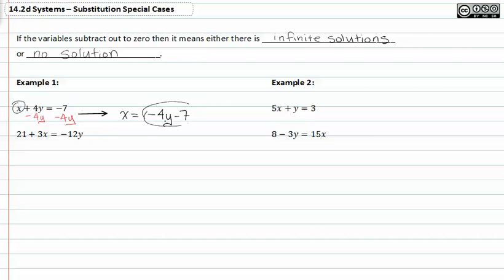Taking this value and plugging it in for x in the second equation gives me 21 plus 3 times the value negative 4y minus seven equal to negative 12y. Now everything is in terms of y. When we solve this, we get 21 plus negative 12y minus 21 is equal to negative 12y.